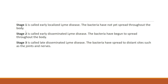The stages of Lyme disease can be divided into three. Stage 1 is early localized Lyme disease — the bacteria have not yet spread throughout the body. Stage 2 is early disseminated Lyme disease — the bacteria have begun to spread throughout the body. Stage 3 is late disseminated Lyme disease — the bacteria have spread to distant sites such as the joints and nerves.